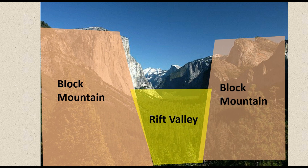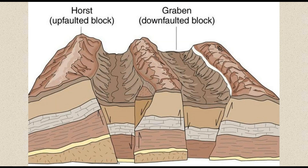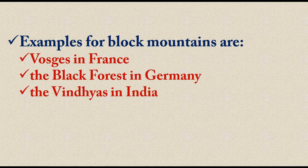There is another way block mountains can form — sometimes a single block in the middle remains standing while the blocks on either side go down, leaving a large mountain in the middle flanked by graben or rift valleys on both sides. Examples of block mountains include the Vosges Mountains in France, the Black Forest in Germany, and the Vindhya Mountains in India.